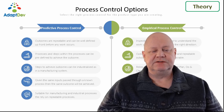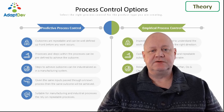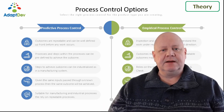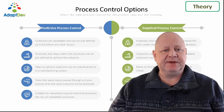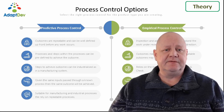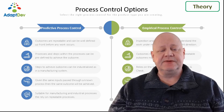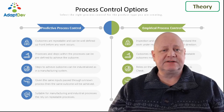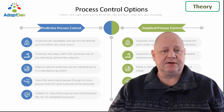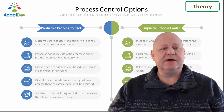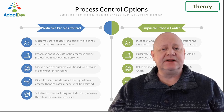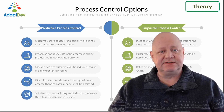Looking at process control options, let's first consider predictive process control. Outcomes are expected to be repeatable and well defined up front before any work occurs. Processes and steps within the processes can be predefined to achieve the outcomes. Steps to achieve outcomes can be industrialised, as in a manufacturing system.